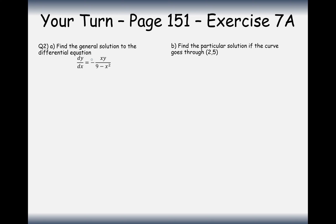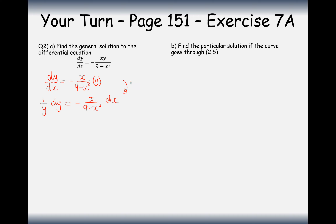Let's have a go at this first one. We have dy/dx equals the expression on the right-hand side. Separating the right-hand side first, it's going to be minus x over (9 minus x squared) times y. Now moving everything onto the correct sides — dividing by y onto the left and multiplying by dx onto the right — we get 1/y dy on the left and minus x over (9 minus x squared) dx on the right. Now integrate both sides: the left-hand side gives ln|y|.